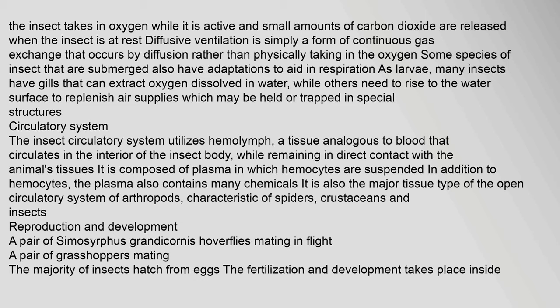The insect takes in oxygen while active and small amounts of carbon dioxide are released when at rest. Diffusive ventilation is a form of continuous gas exchange that occurs by diffusion rather than physically taking in oxygen. Some submerged species of insect have adaptations to aid in respiration; as larvae, many insects have gills that can extract oxygen dissolved in water, while others need to rise to the water surface to replenish air supplies. The insect circulatory system utilizes hemolymph — a tissue analogous to blood — that circulates in the interior of the insect body while remaining in direct contact with the animal's tissues, composed of plasma in which hemocytes are suspended.